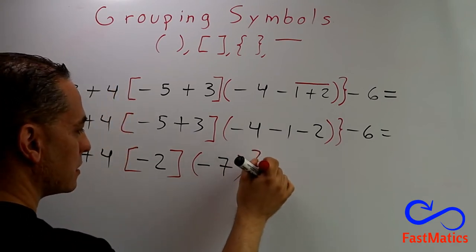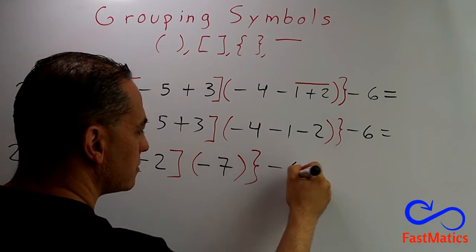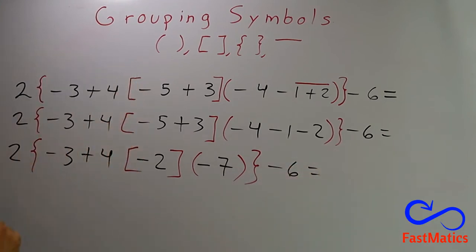After that, minus 6. Remember that we have a grouping symbol that opens and that closes. Now, we are going to copy everything, but we are going to eliminate brackets and parentheses.